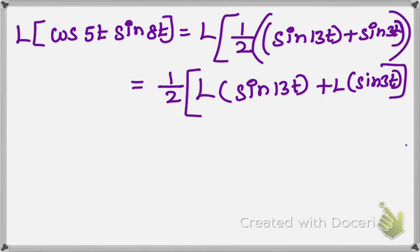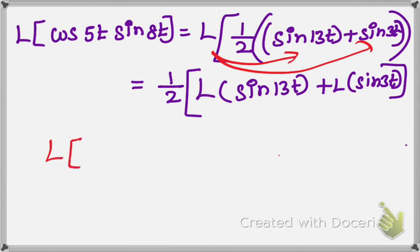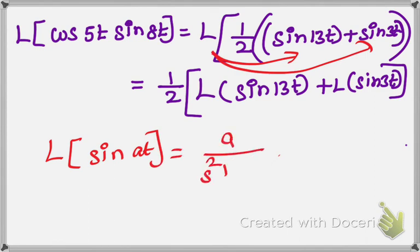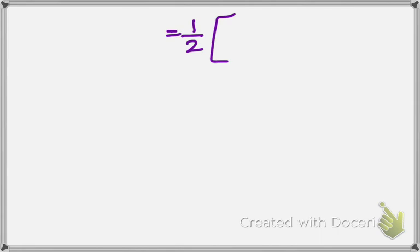We know the formula: L of sin(at) equal to a divided by s-squared plus a-squared. Applying this formula, for the first term a equals 13, and for the second term a equals 3. Now apply the formula to both terms.